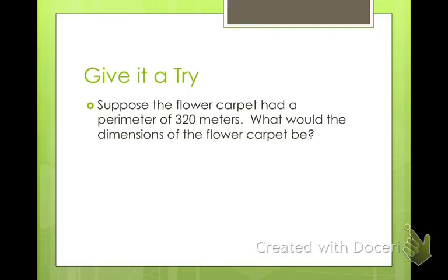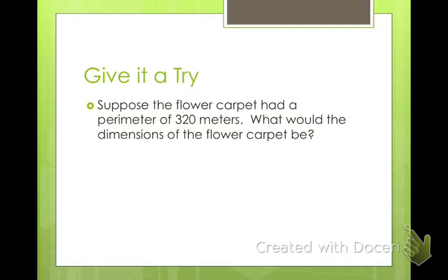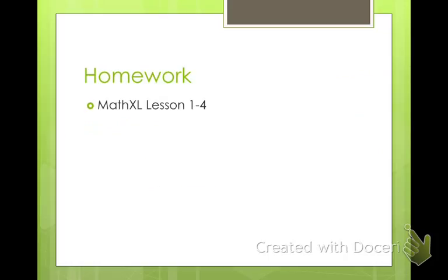Go ahead and try this one: suppose the flower carpet had a perimeter of 320 meters instead of 200. What are the new dimensions? Hopefully you got 40 by 120 meters. That's all I've got for you today — I hope you have fun solving equations. Have a good day, guys!